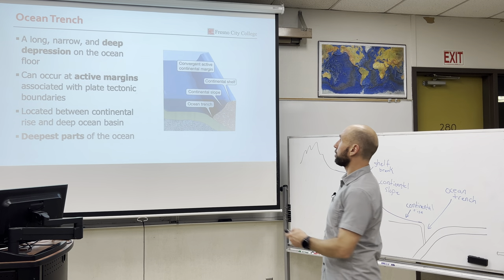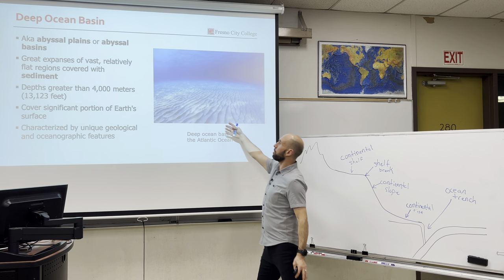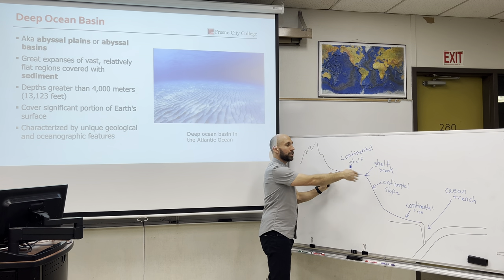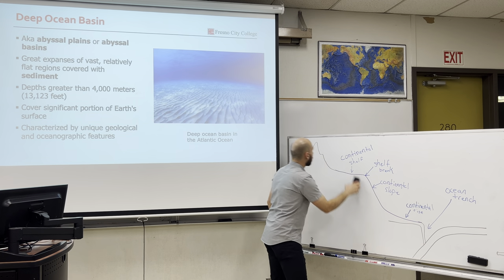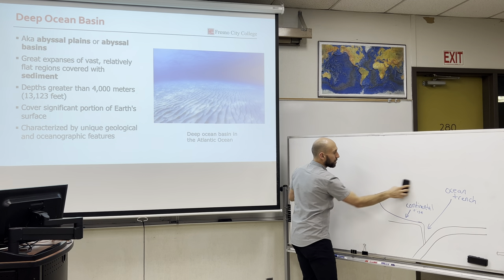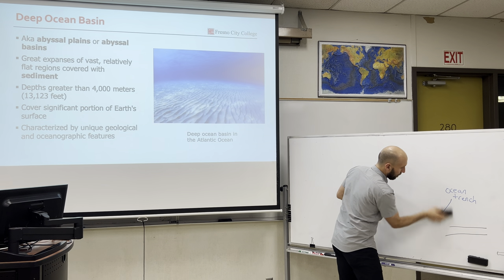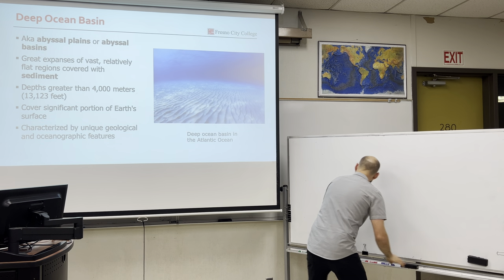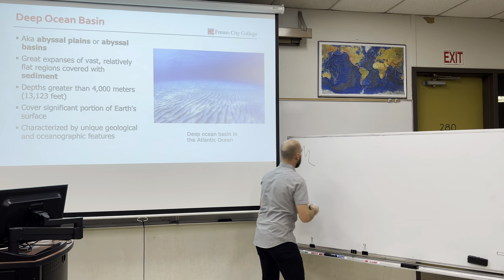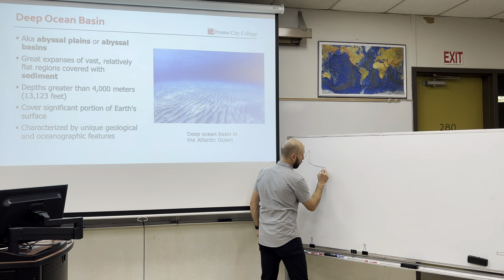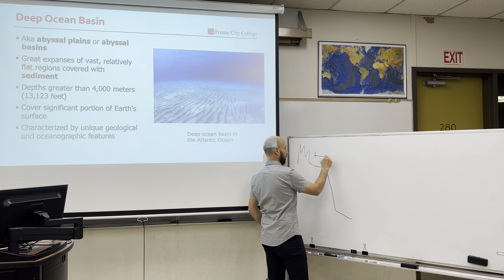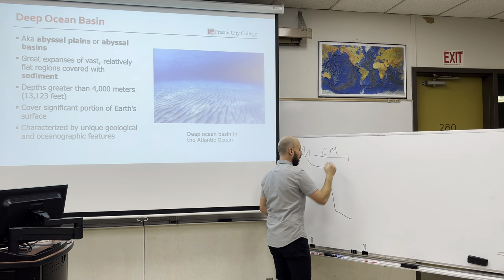From land, we will always have a continental margin — shelf, shelf break, slope, rise — and after the continental margin it will always transition into the deep ocean basin. We divide marine provinces by depth and location. The deep ocean basin, also known as the abyssal plain or abyssal basin, is covered with sediment. It's pretty deep — greater than 4,000 meters, or 13,000 feet — and covers a very significant portion of Earth's surface.